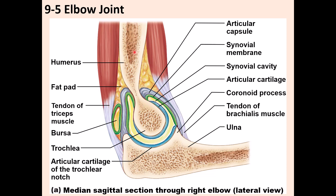In cross-section, the trochlea of the humerus articulates with the trochlear notch of the ulna, each covered by hyaline cartilage and separated by synovial fluid in the synovial cavity. Synovial fluid comes from the synovial membrane lining the inner capsule. A bursa is located between the triceps muscle tendon (at the back of the arm) and the distal humerus to reduce friction during elbow movement.